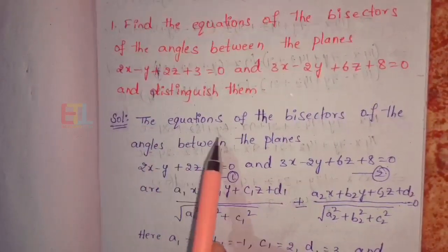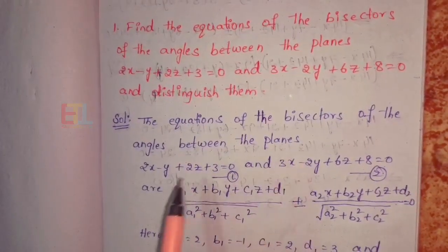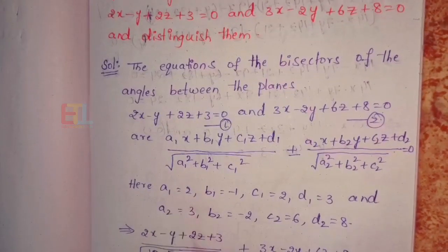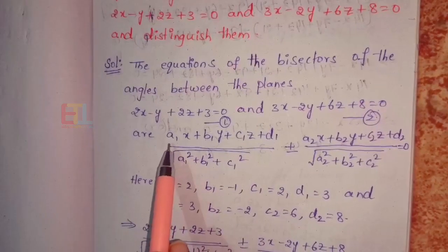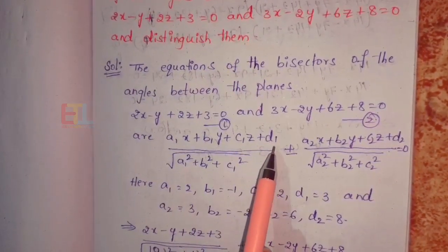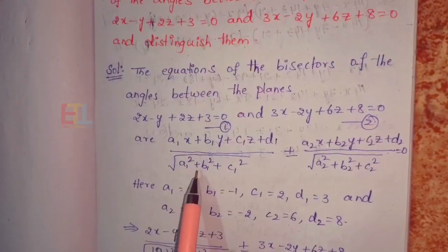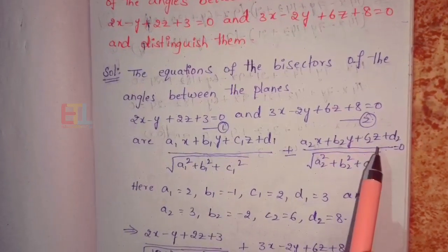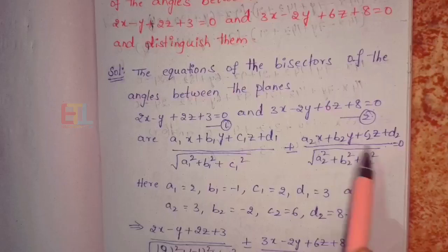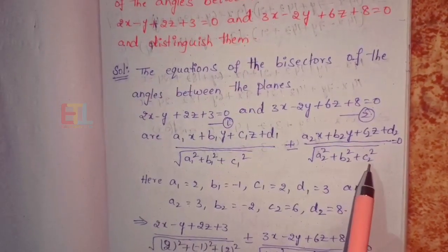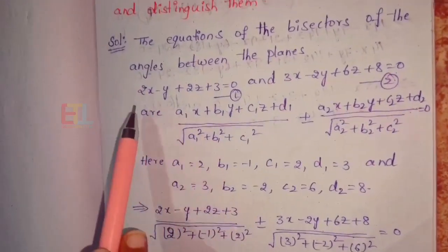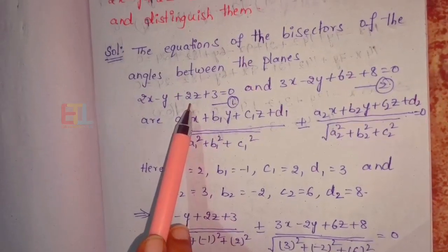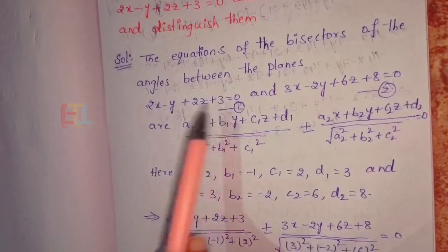The equations of the bisectors of the angles between the planes — equation 1 and equation 2. The formula to find these two equations is: a1x plus b1y plus c1z plus d1 divided by root of (a1² + b1² + c1²) plus or minus a2x plus b2y plus c2z plus d2 divided by root of (a2² + b2² + c2²) equals 0. Here a1, b1, c1, d1 are the coefficients from the first equation, and similarly for the second.